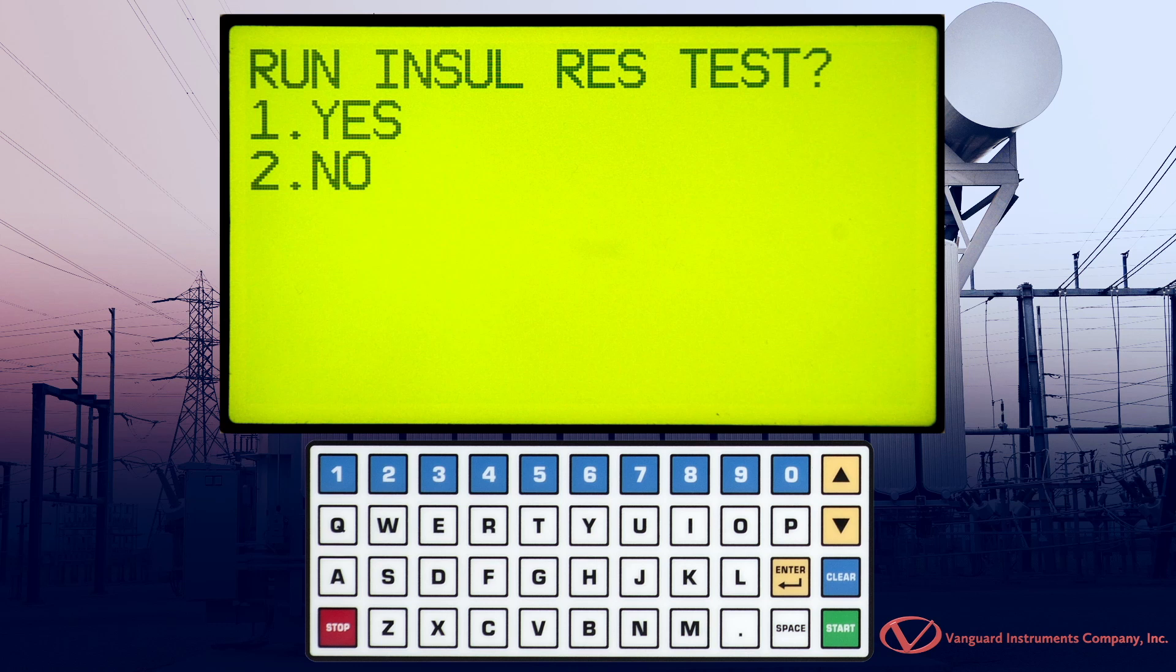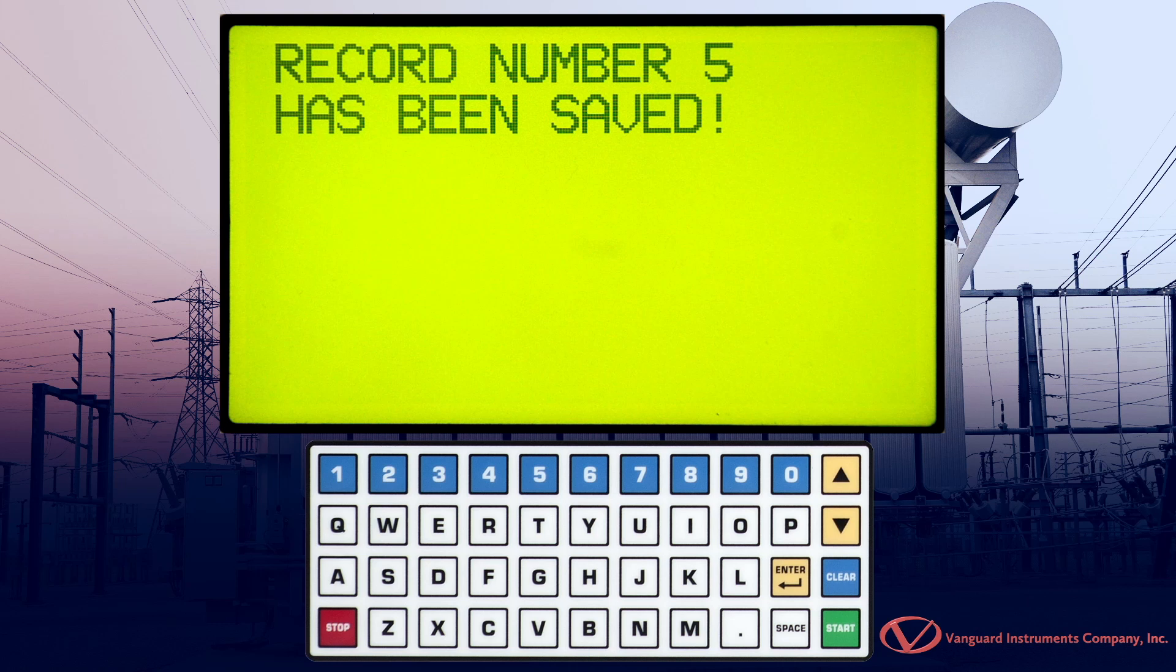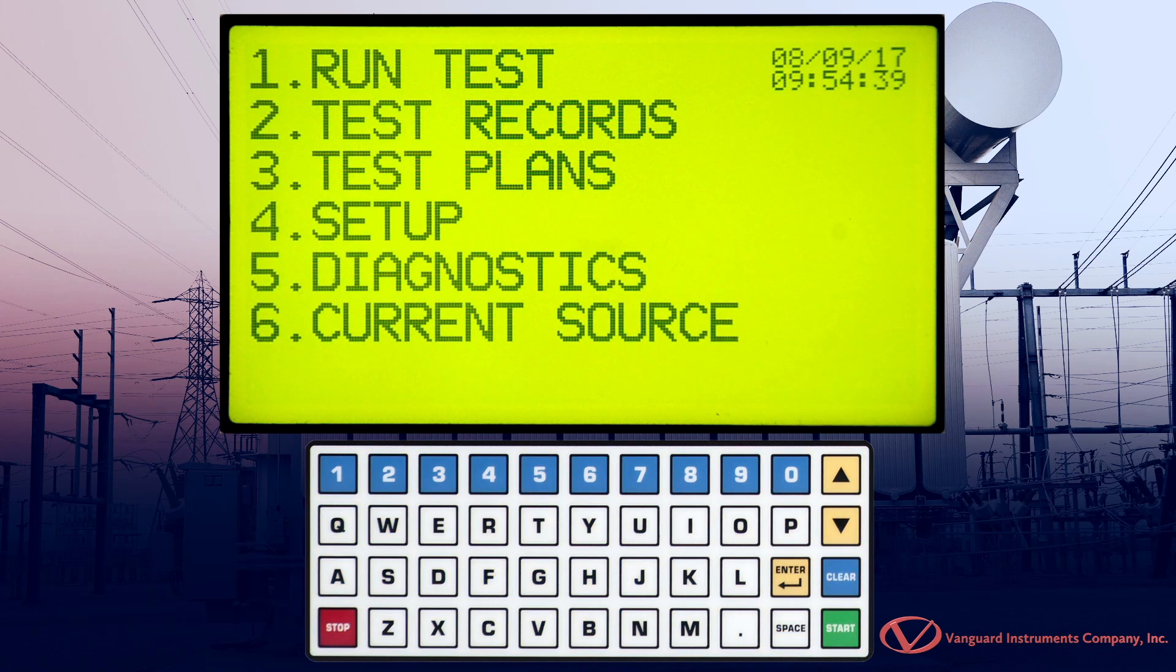We can also perform an insulation resistance test if desired. We'll press 2 for no. Now press 1 to save the test record. The test record is now saved to the unit's internal memory. Press any key to return to the main menu. Now let's review the test results.